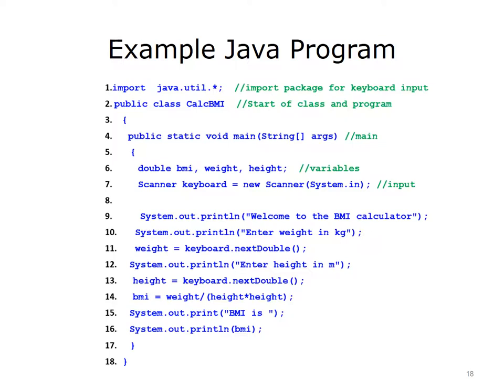Here is what the Java program looks like, line by line. For reference, the line numbers are shown on the left — these are not part of the code. What is written on the right side of the double forward slashes are comments. Comments are used to clarify and document a program and do not affect code execution. Line 1: the first statement imports the package java.util. Line 2: the next line is the first line of the class calcBMI — the name of the class that contains the program. In Java, all code must belong to a class. Line 3: an open curly bracket, which signifies the start of a class or method. Line 4: the first line of the main method. All code in Java is either an instance variable declaration or part of a method definition. Every Java program must contain a main method.